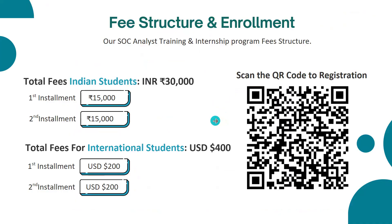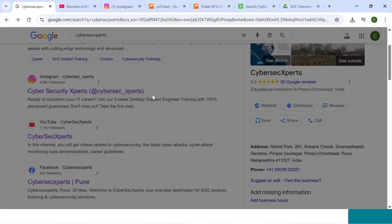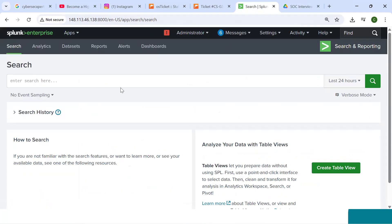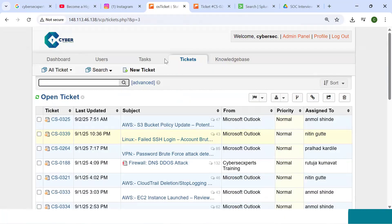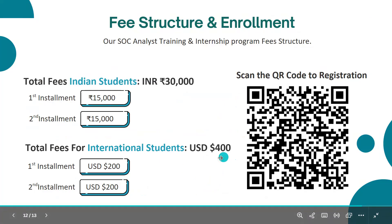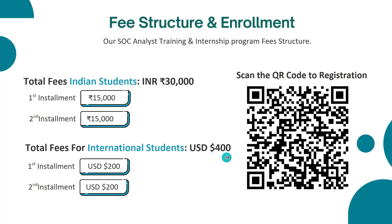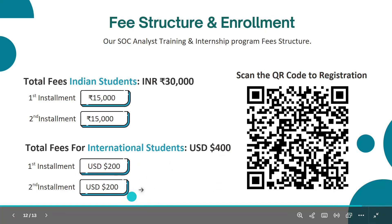The total fees for Indian students is ₹30,000 payable in two installments: ₹15,000 upfront to start training and get access to everything, and ₹15,000 after placement. With the first installment, you get training videos, interview Q&A, Splunk platform access, 110 tickets, and the study community. For international students, the total fee is $400 USD — $200 first installment and $200 after placement.